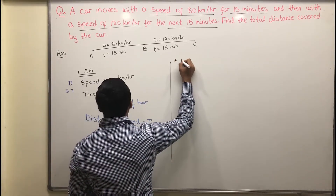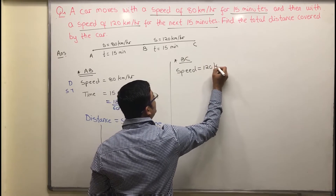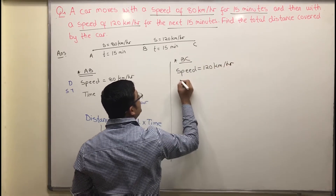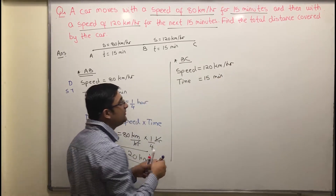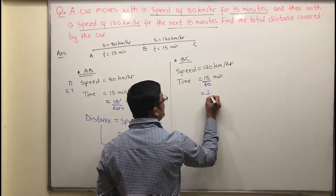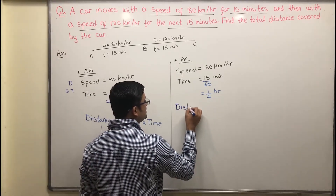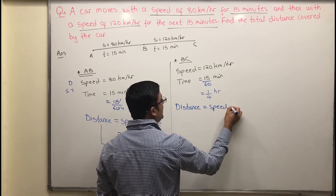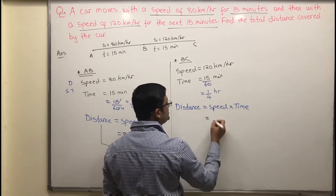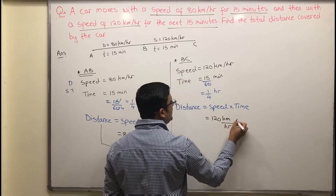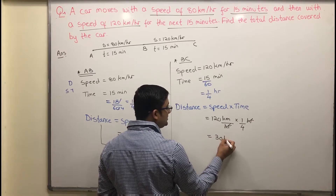Similarly, for B to C, the speed is 120 kilometers per hour and the time is 15 minutes. Since speed is in kilometers per hour, time must be in hours, so divide by 60 — that is one-fourth of an hour. Applying the formula: distance equals speed multiplied by time, which is 120 kilometers per hour multiplied by one-fourth of an hour.